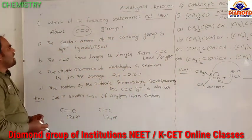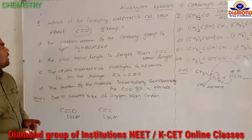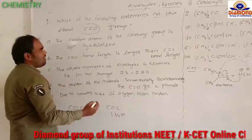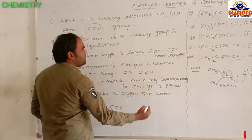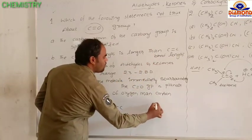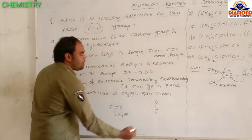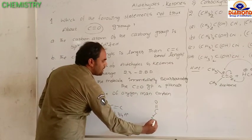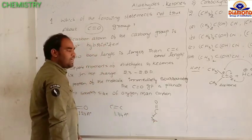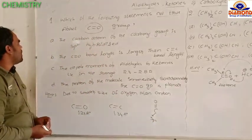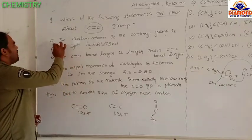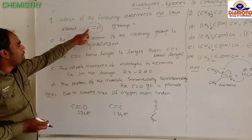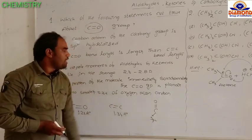So here, first option: the carbon atom of the carbonyl group is SP2 hybridized. That is a correct statement, because in the carbonyl group — C=O — the carbon hybridization is SP2 hybridization and it has a planar structure. Therefore, this is a correct statement. In C=O, carbon hybridization is SP2 hybridization.